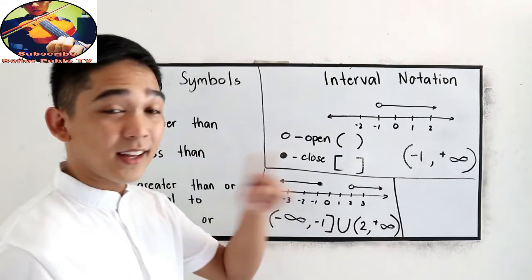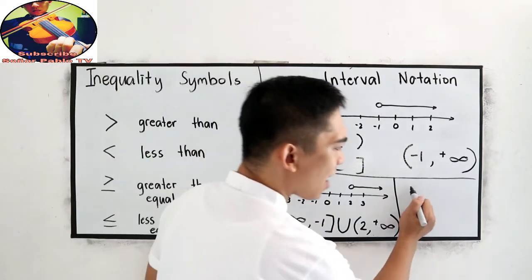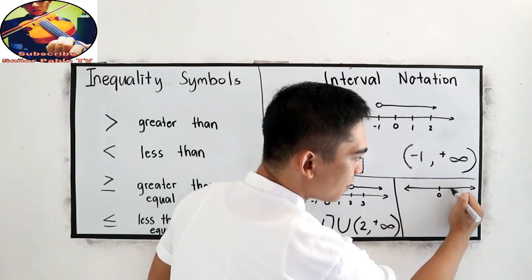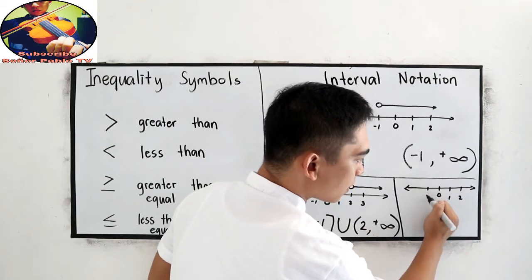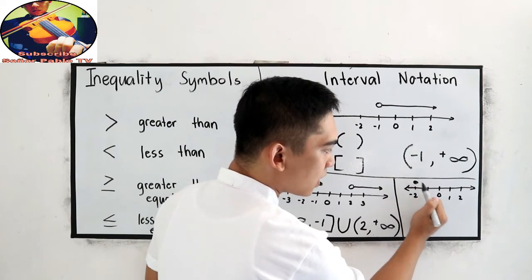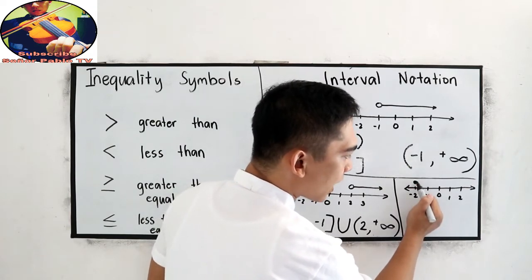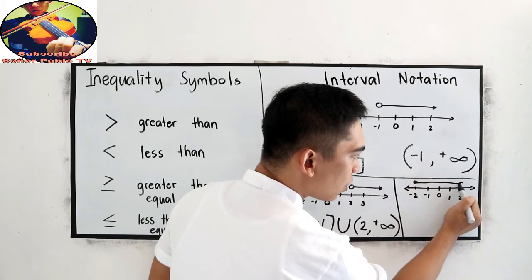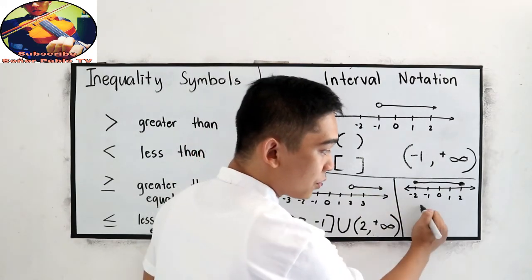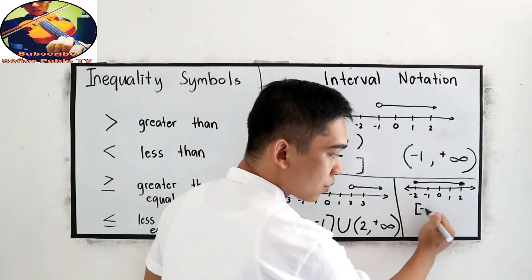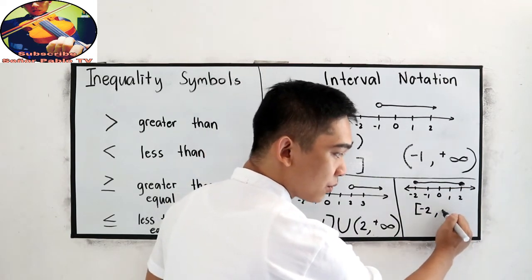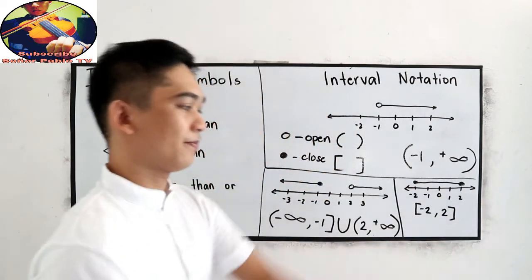Another example. What if we have a number line from negative 2 to positive 2, and your inequality is closed at negative 2 going to closed at positive 2? Since we are closed at negative 2 and closed at positive 2, both endpoints are included, so we use brackets: negative 2 with bracket to positive 2 with bracket.